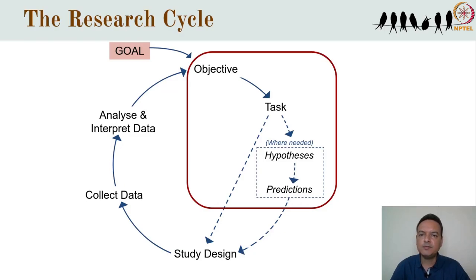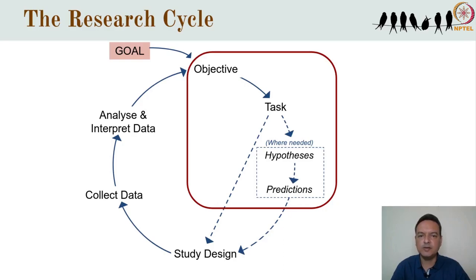Sometimes we can answer the task-level question by direct observation, but in other cases, where the phenomenon we are interested in can't be directly observed, we need to frame one or more hypotheses, from which we deduce observable predictions that can be tested through observation or experiment. I spoke about this process in the lecture on methods of science and posing research questions.